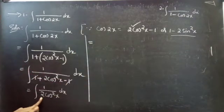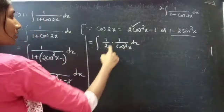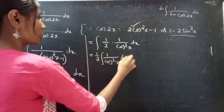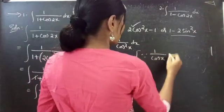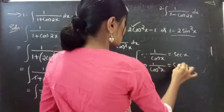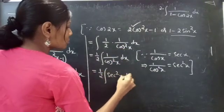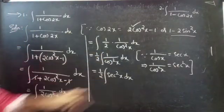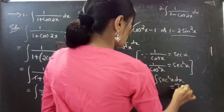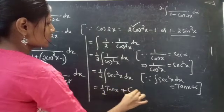We can rewrite this as integral of (1/2) · (1/cos²x) dx, taking the constant 1/2 outside the integral. Since the reciprocal of cosx is secx, squaring gives 1/cos²x = sec²x. Replacing 1/cos²x by sec²x and using the identity that the integral of sec²x dx equals tanx, we get (1/2)tanx + C.